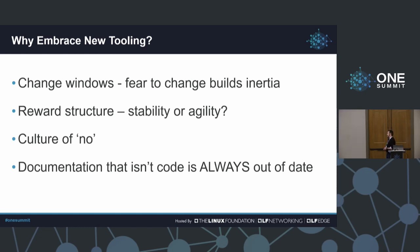The other thing I'll touch on is that documentation that isn't code — that exists in a separate document or spreadsheet — is always out of date. That's my experience, and I'm sure many of you share that sentiment. Enabling these GitOps-focused approaches really ensures that the code itself is the documentation. You need to know what's running in the network — you can reference what is in the GitHub repository and correlate that against what has been run in your CI-CD system to see the state of the network.